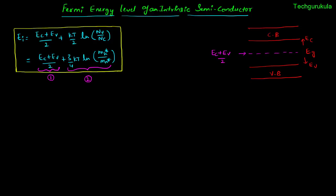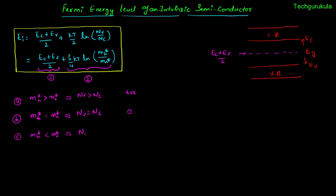We consider three cases based on the ratio of Mh star to Mn star. Case A: Mh star is greater than Mn star, so Nv is greater than Nc and the ln value is positive. Case B: Mh star equals Mn star, so Nv equals Nc and ln of 1 is 0. Case C: Mh star is less than Mn star, so Nv is less than Nc and the ln value is negative.